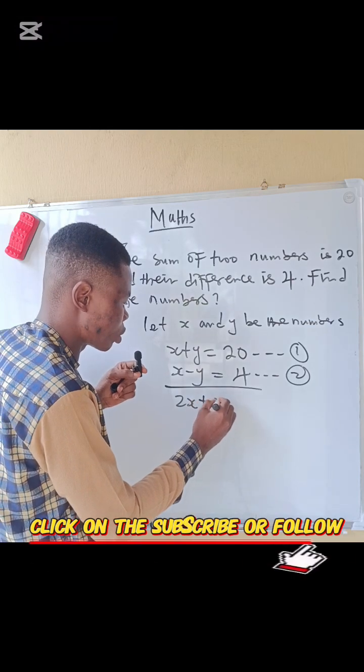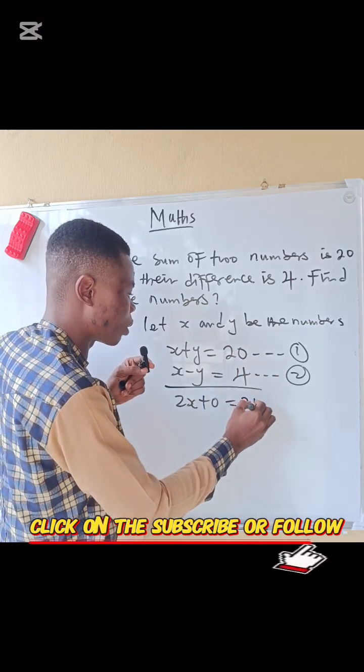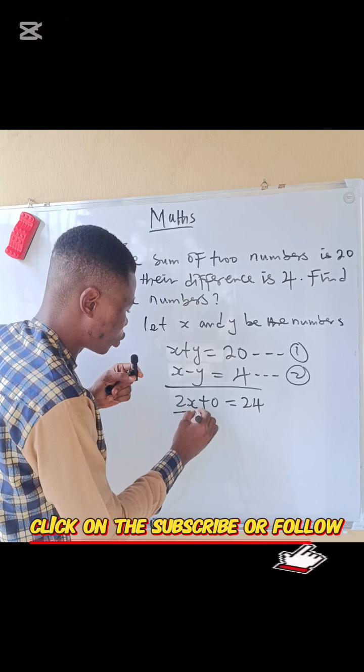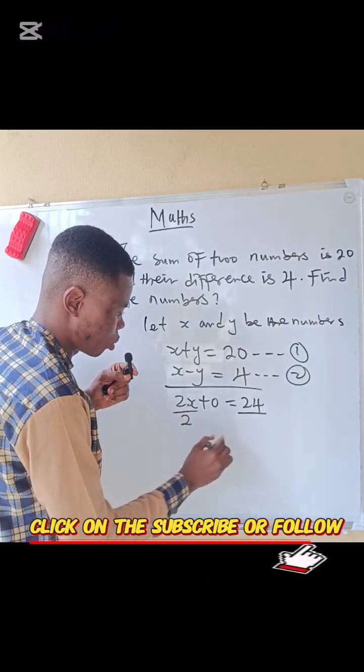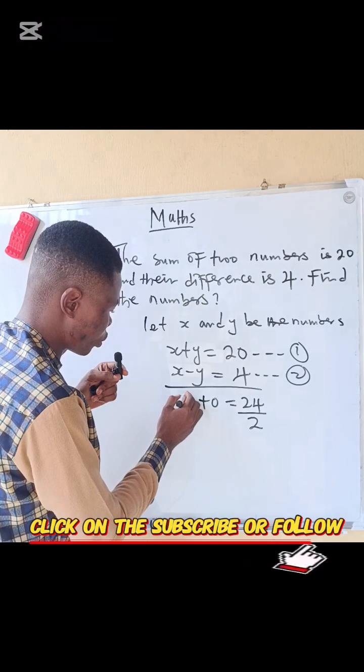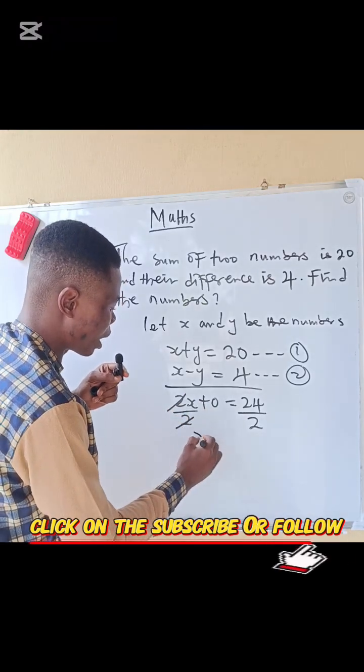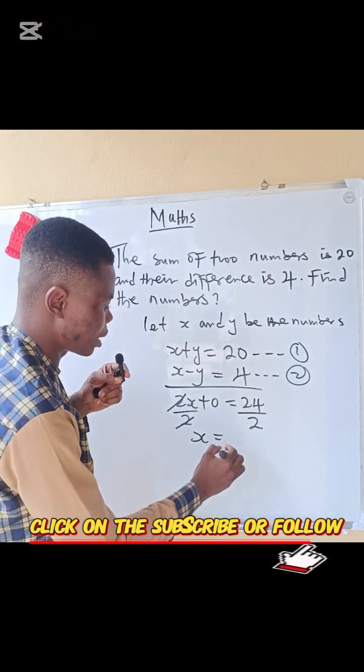Equals 20 plus 4, that is 24. Right. So divide through by 2. We are looking for x. So now x equals 24 divided by 2. What is the answer? That is 12, the first number.